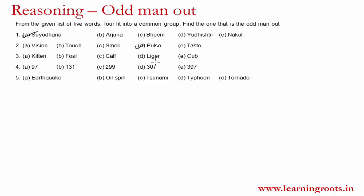Next: Kitten, Foal, Calf, Liger and Cub. Kitten is the young one of a cat. Foal is again a young animal. Calf — a cow has a calf. Cub — a tiger or fox would have a cub, so cubs are also young ones of animals. Whereas Liger is a mix between a lion and a tiger — a genetically created species made by mating a lion with a tiger. So Liger is the odd man out; it is not a young one but a different animal altogether.